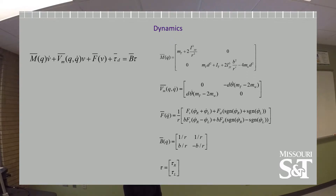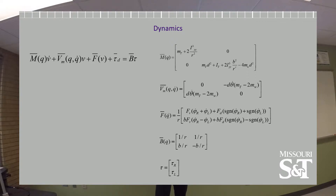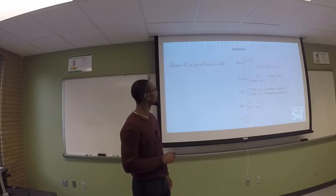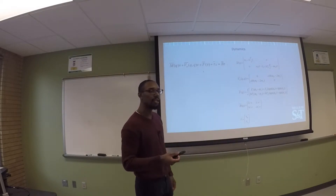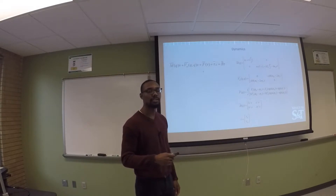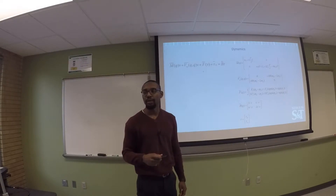The dynamics are expressed here. We have a matrix for the overall mass of the robot, a matrix for the Coriolis and centrifugal forces and accelerations on the robot, a friction vector, and a matrix B that maps the control inputs to the torques applied to the actual robot. We have a tau vector that is the control input, and an optional tau D that can be used to simulate torque disturbances.